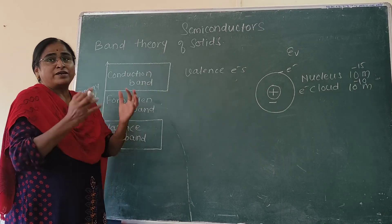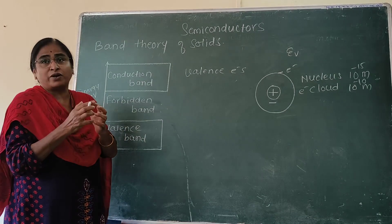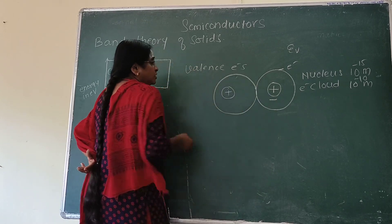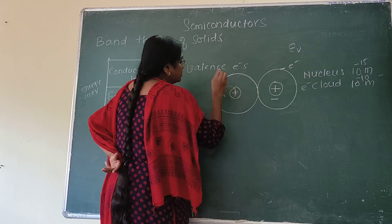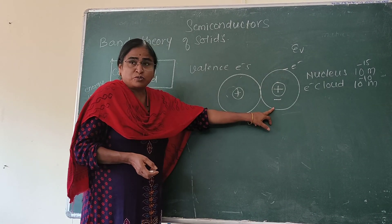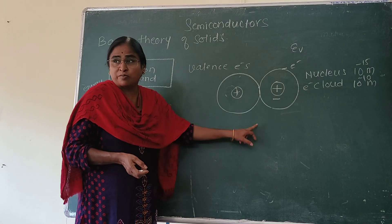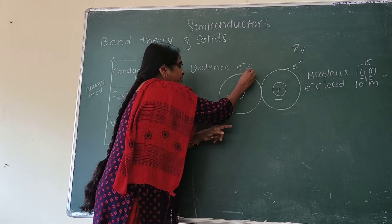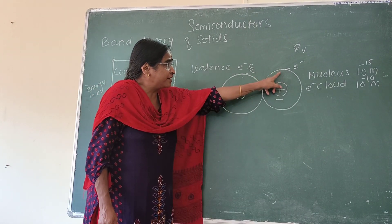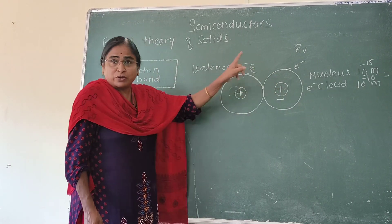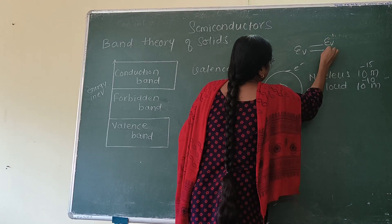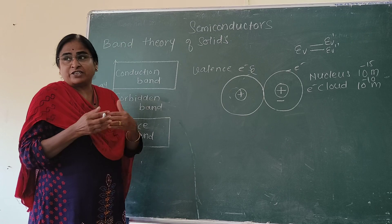Now in solids, a number of atoms are closely packed together and are in physical contact with each other. When two atoms are in contact, the valence electron of the first atom and the valence electron of the second atom experience the same charge environment. The valence electron of the first atom is influenced by the nucleus of the neighboring atom, and similarly the valence electron of the second atom is influenced by the nucleus of the first atom. Because of this, the valence energy levels are slightly modified, and now you have two valence energy levels — say E_V and E_V — which are very close to each other.